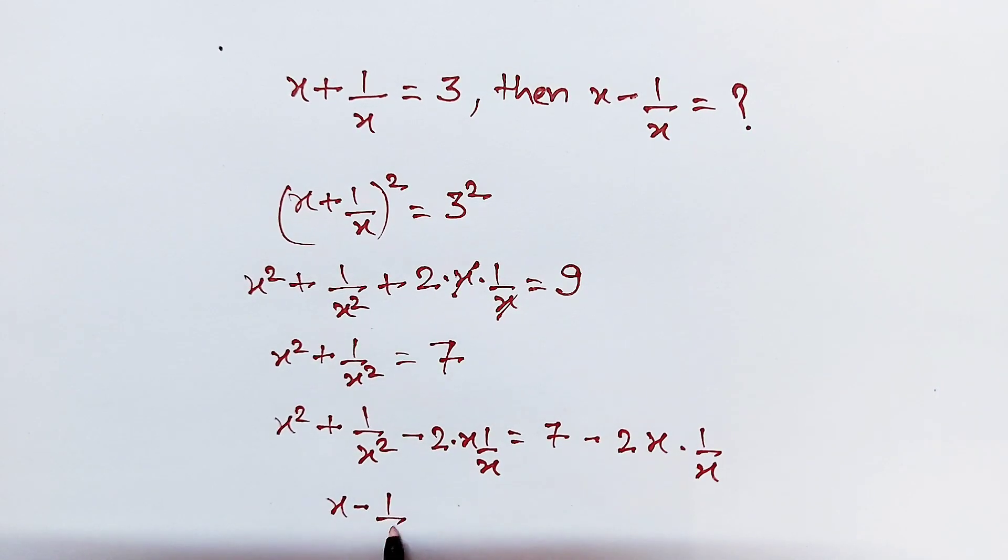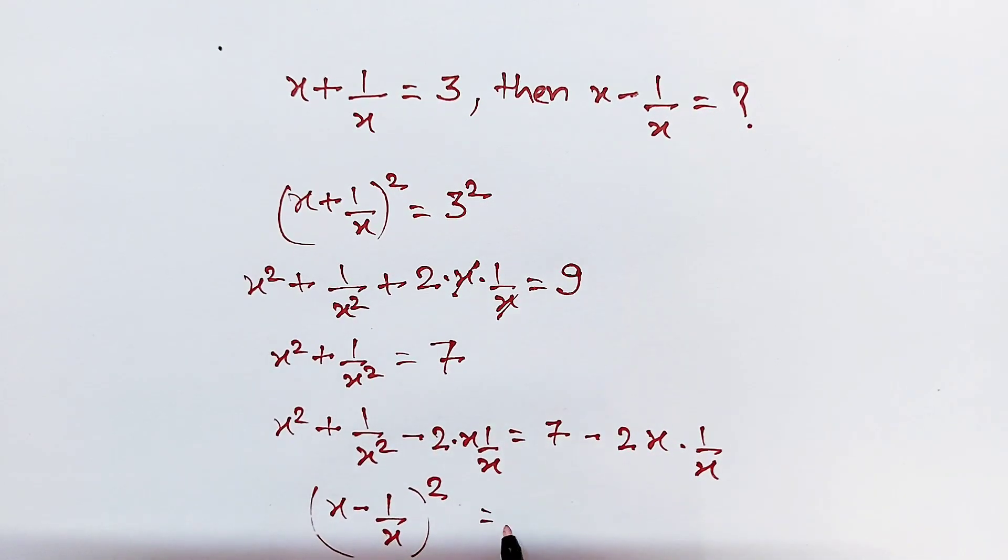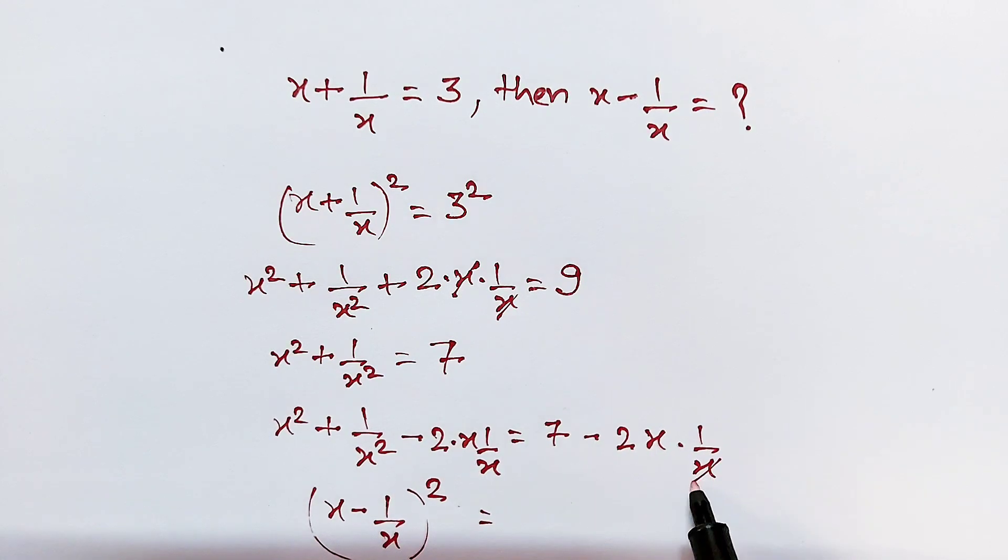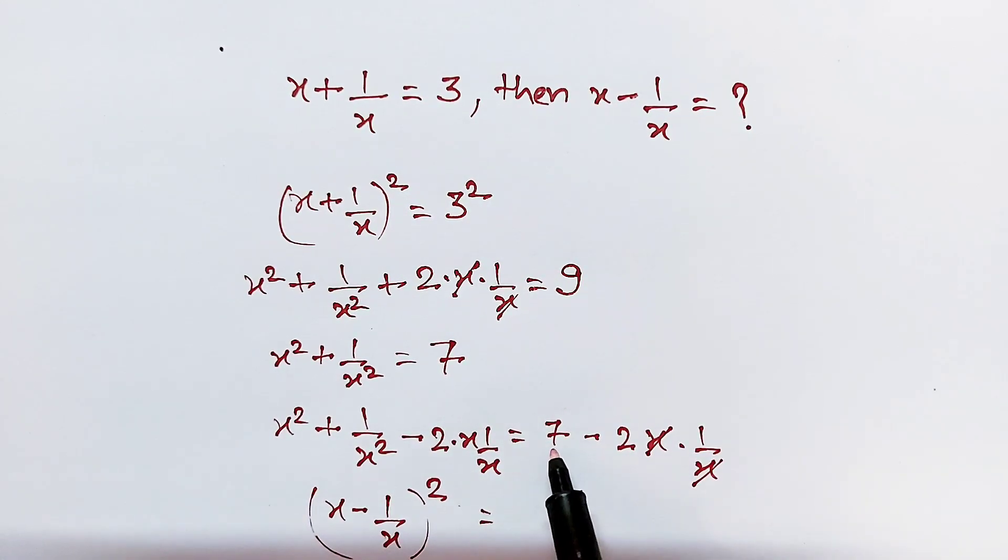Whole square. And this x cancels out this x, and 7 minus 2 is 5.